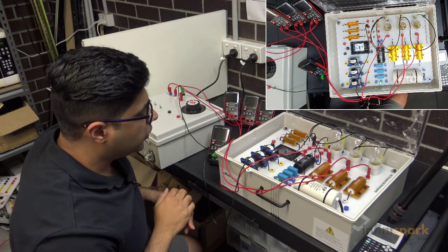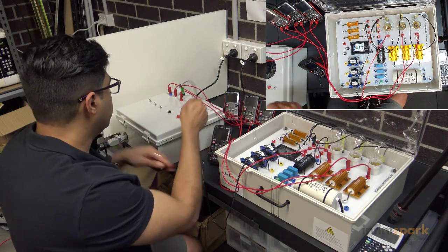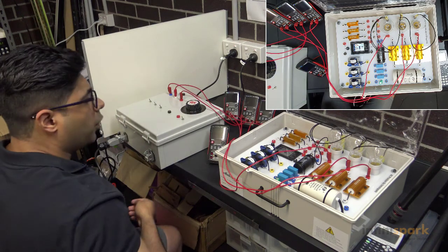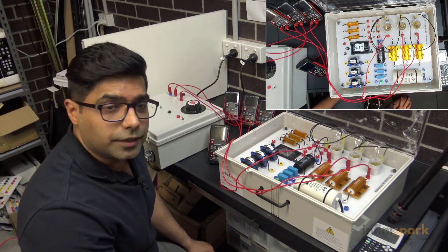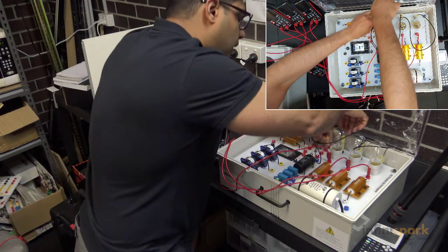Now to change this to delta, first thing we know is we don't need neutral so I'm going to remove the neutral. What we also don't need in a delta is a star point so let's remove the star point.